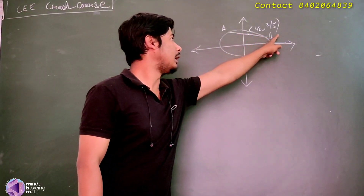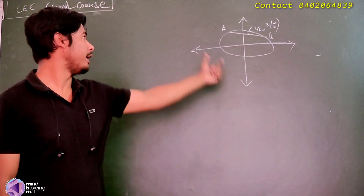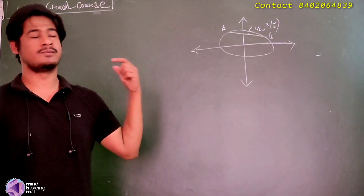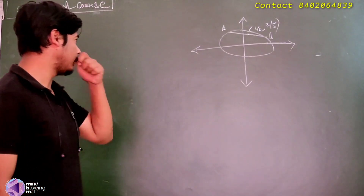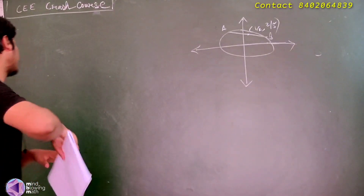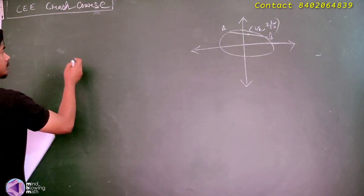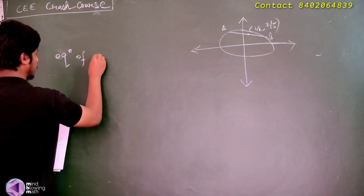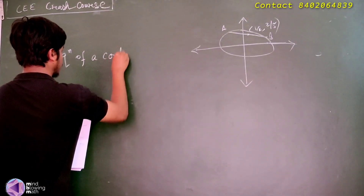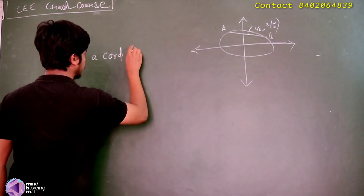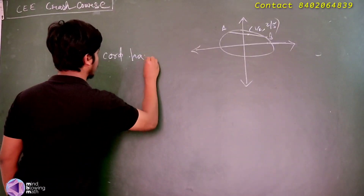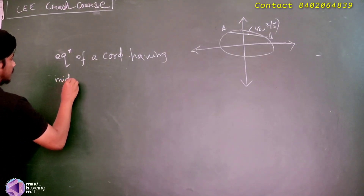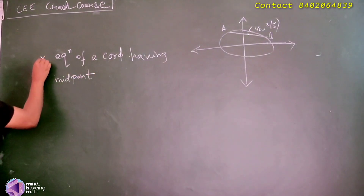We want to use the chord midpoint formula. The equation of a chord having a given midpoint uses a specific transform formula. The formula will be applied here using the given point.